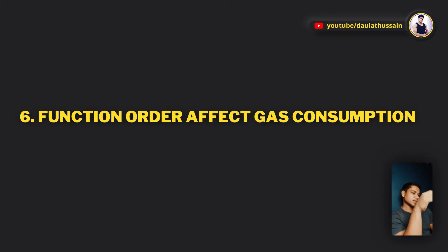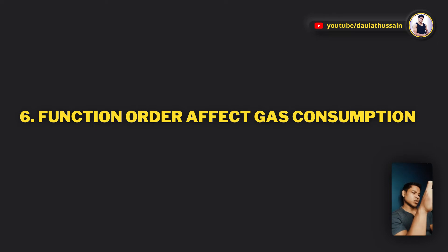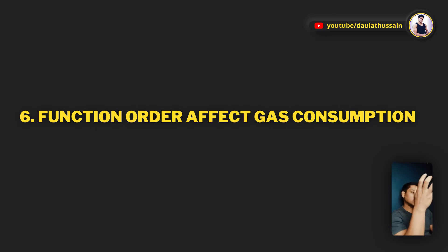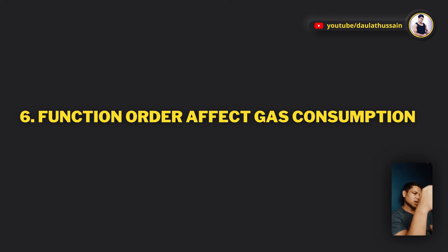Point number six: function order matters in your smart contract. Each position in the contract costs an extra 22 gas, and the order depends on the method ID. If you rename frequently accessed functions to have a lower method ID, you will save gas. For highly reusable functions, always try to give them short names and short IDs — every call to that function saves a little gas.